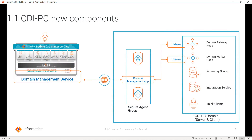Moving forward, these are the new components which have been introduced in CDI PC domain. To understand it better, let's divide the architecture into three different parts. On the right-hand side is our CDI PC domain, which can have multiple gateway or worker nodes, with all services like repository service, integration service, and the thick clients. On the domain side, we have a new core service called Cloud Connect or Listener. This is the core service or component responsible for connectivity and communication. We can monitor all requests coming from the cloud side in the Cloud Connect log. In later parts of the CDI PC playlist, we will cover more details on the logs and from which location to check them.